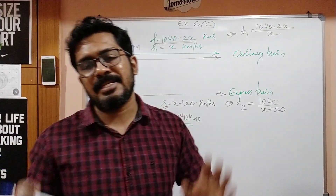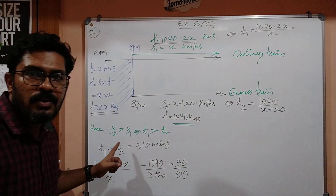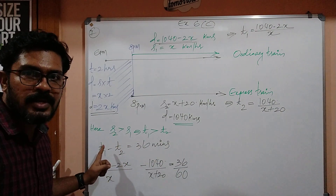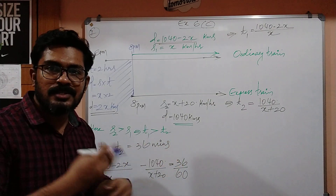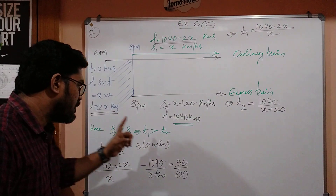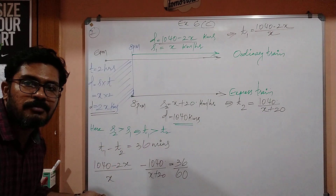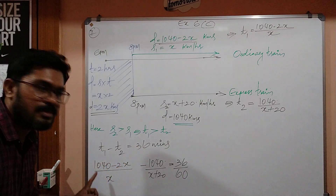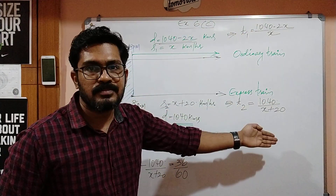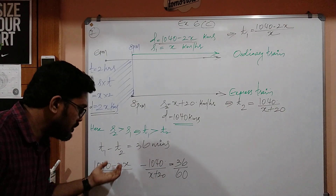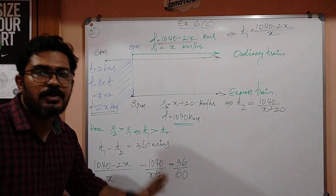Now let us establish the relation. The difference between the two times is 36 minutes. Since the speed of the express train is greater than the speed of the local train, t1 is greater than t2. Therefore, t1 minus t2 equals 36 minutes. Substituting: 1040 minus 2x over x, minus 1040 over x plus 20, equals 36 divided by 60. This is the basic equation we have obtained.